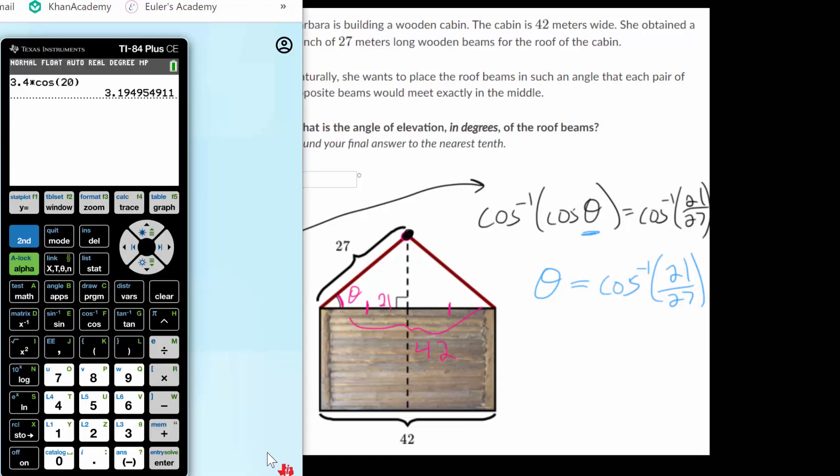So let's get the calculator out, and we're going to put inverse cosine of 21 over 27. Notice the inverse sine functions are the blue lettering here, so we need to hit second.